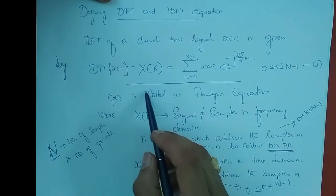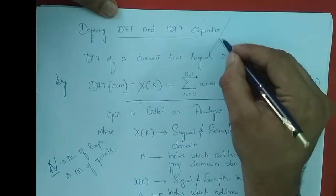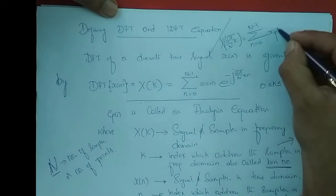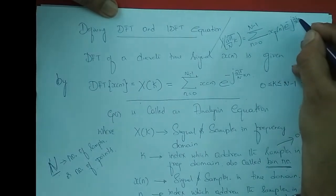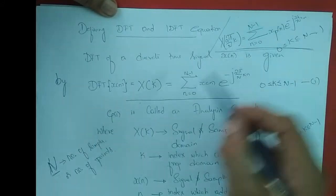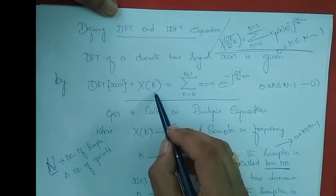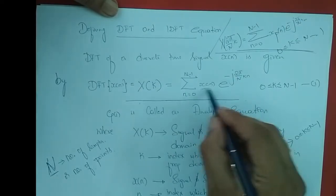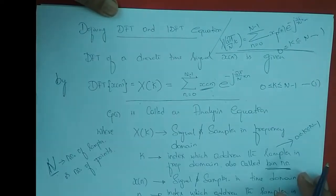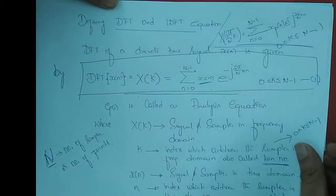From where did we get the DFT equation? We already derived it — in frequency domain sampling, the equation was: x of 2 pi by N into k equals summation of x_p of n, e to the power minus j 2 pi by N into k n, where k varies from 0 to N minus 1. Comparing these two, instead of writing x of 2 pi by N into k we normalize and write X of k, and instead of x_p of n we write x of n, assuming the samples form a periodic signal. This equation is the DFT, also called the analysis equation.